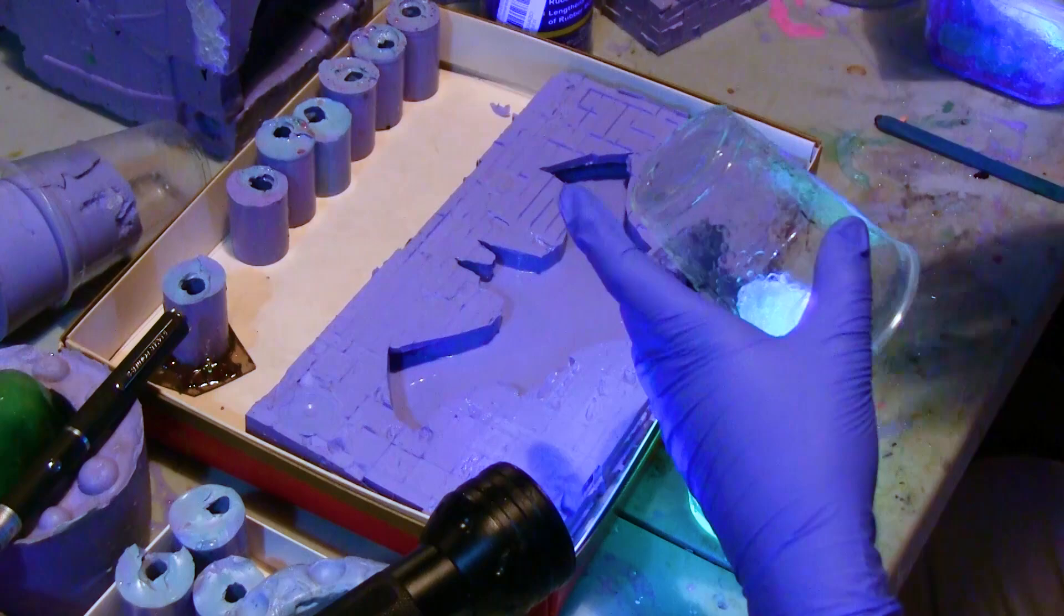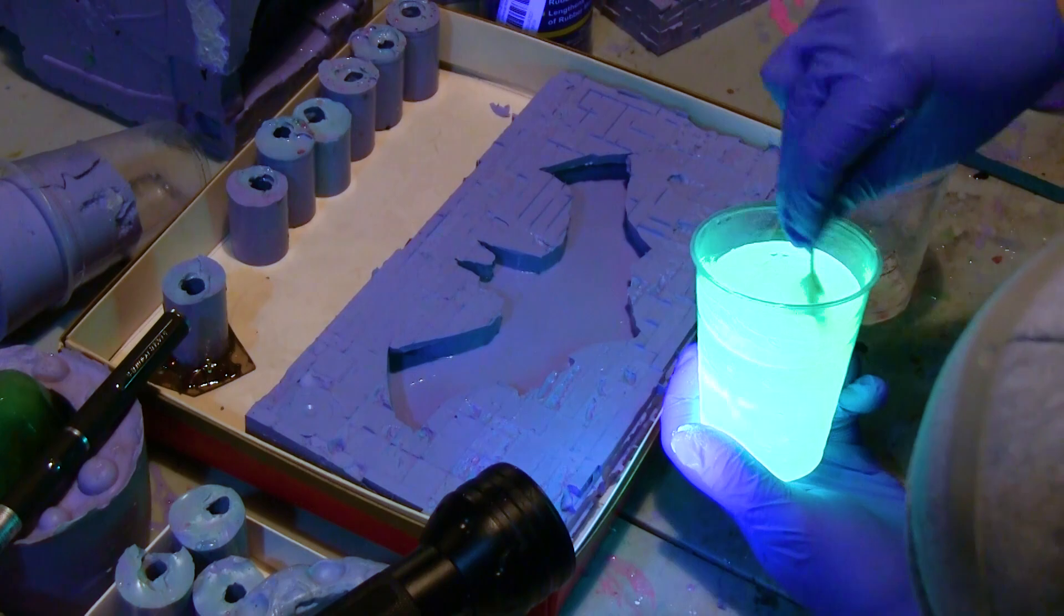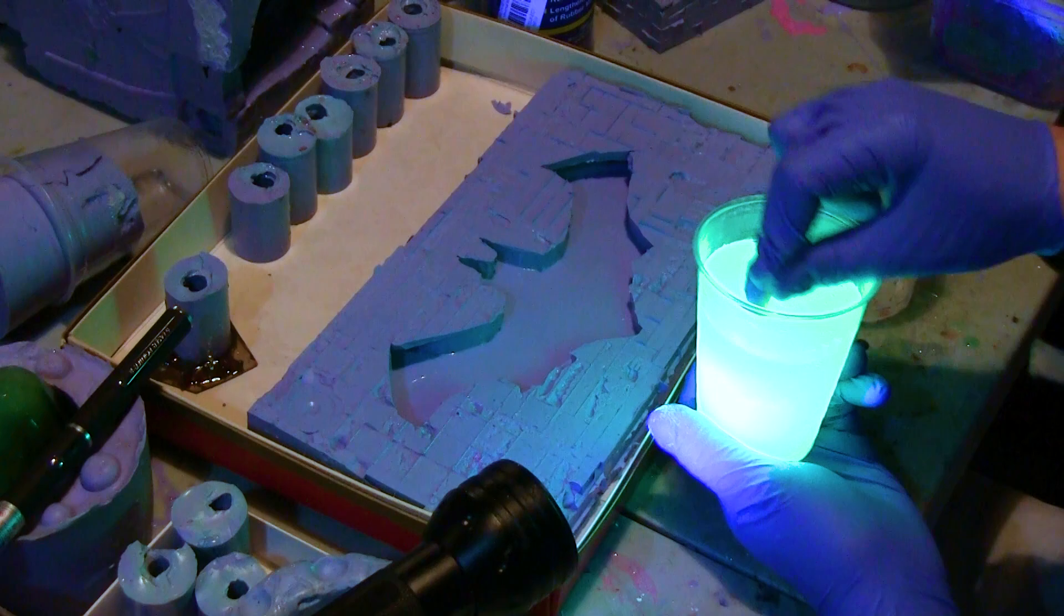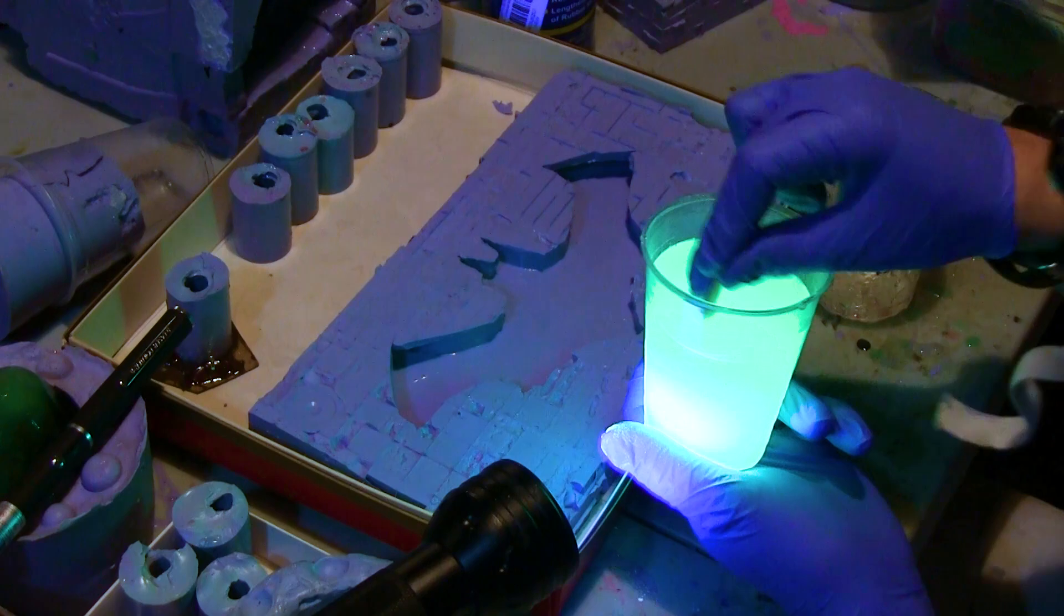I mixed it until the glow powder was evenly dispersed and transferred between the two mixing cups a couple of times just to get a better mix ratio. This resin has a longer working time than usual, so I took my time and made sure to do a thorough job. When I was satisfied the mix was even, I poured it into the mold.